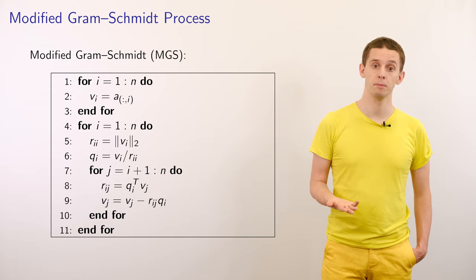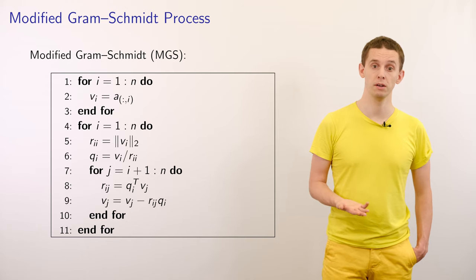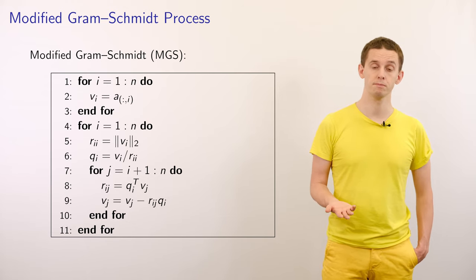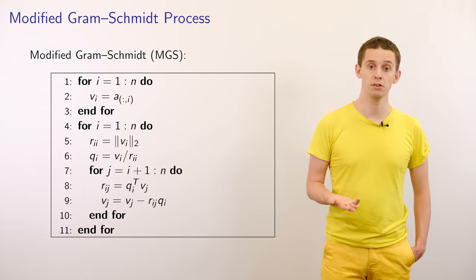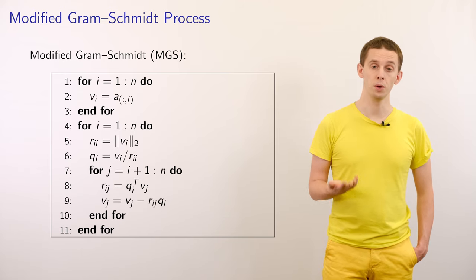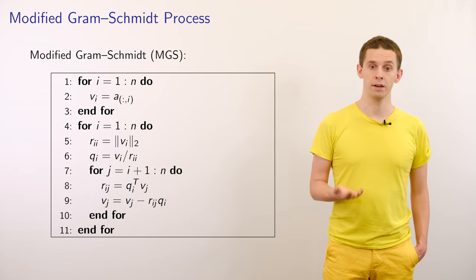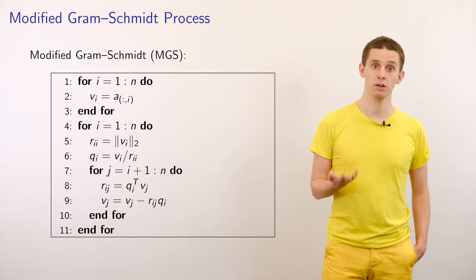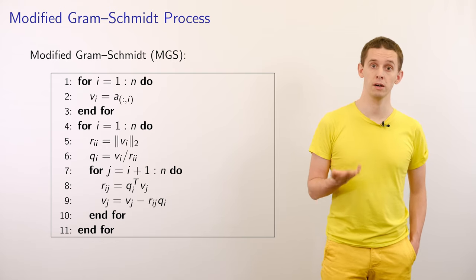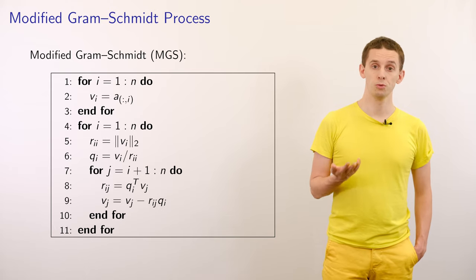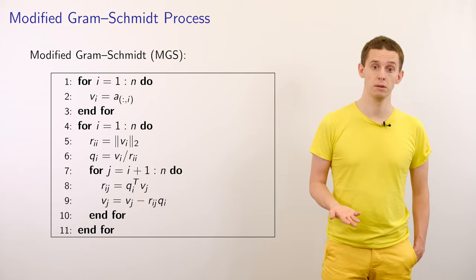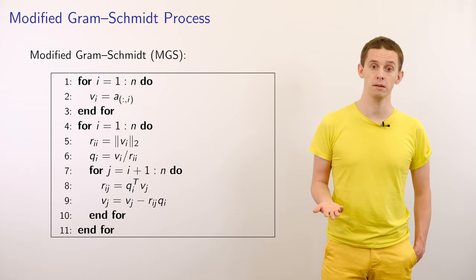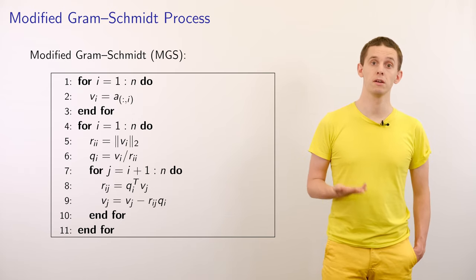The modified Gram-Schmidt algorithm can be written as follows: a first loop for i = 1 to n sets each vi equal to the corresponding column of A. A second loop for i = 1 to n computes the size of vector vi, uses it to compute normalized vector qi, and then — because all columns have already been orthogonalized — the new qi already satisfies orthogonality properties. Once we have the new qi, we orthogonalize all remaining columns: an inner loop for j = i+1 to n updates each vj.